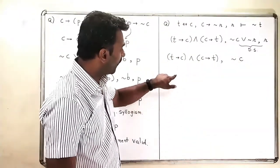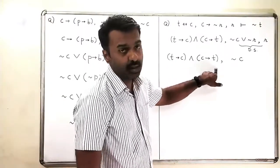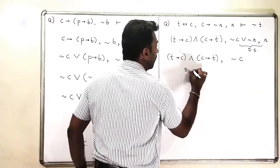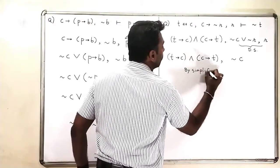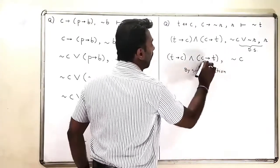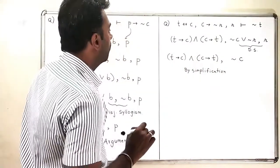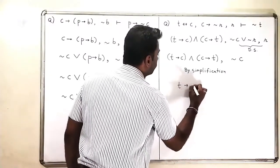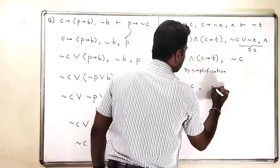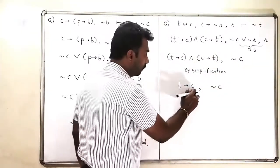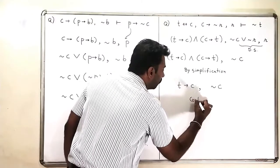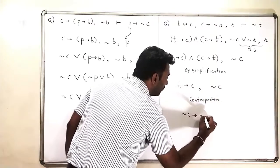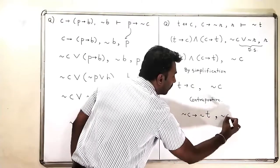Now in the next step, I have C implies T and negation C. By simplification I will drop one part. Suppose I keep T implies C. I then have T implies C and negation C. If I write the contrapositive of T implies C, I get negation C implies negation T, along with negation C.